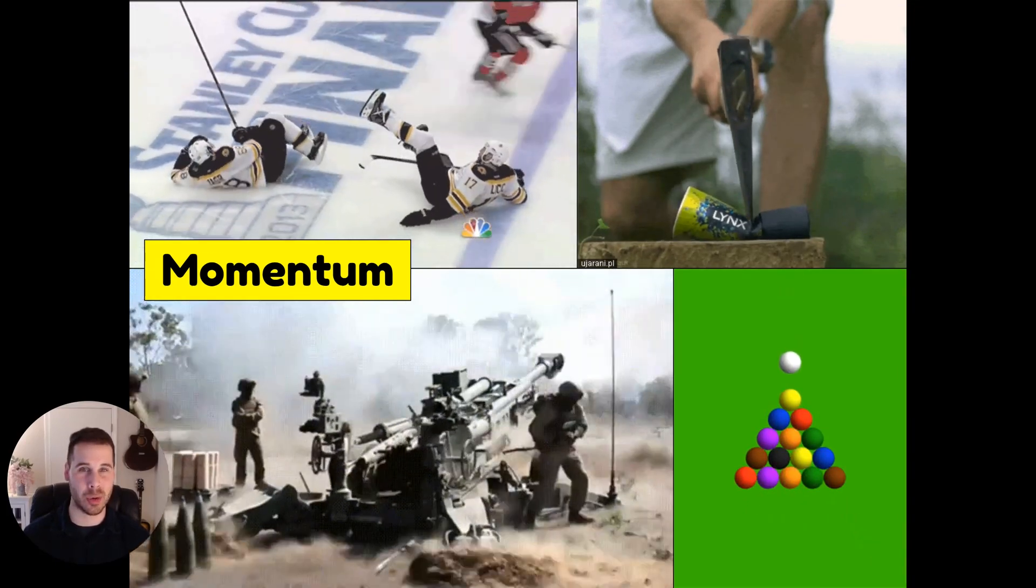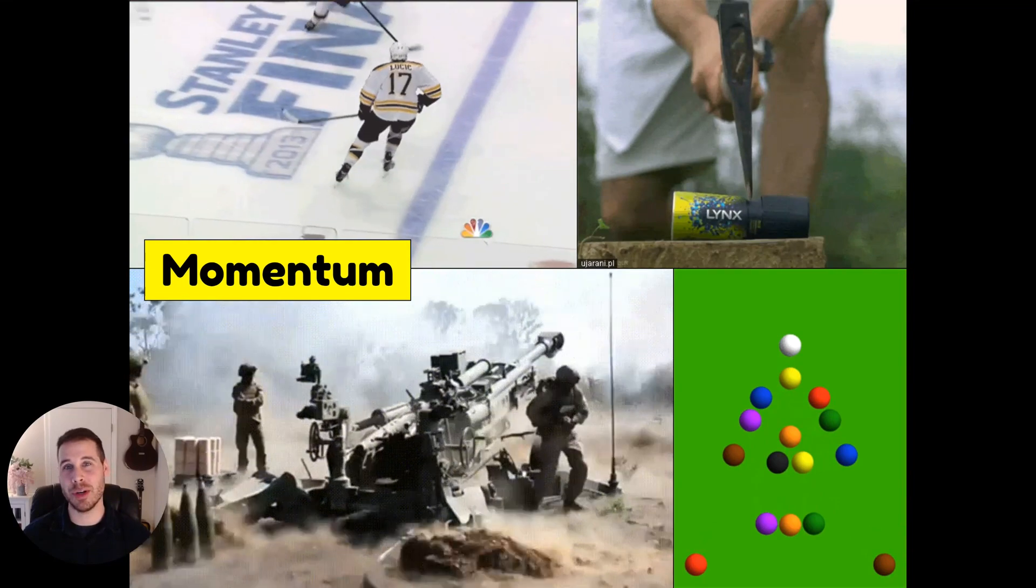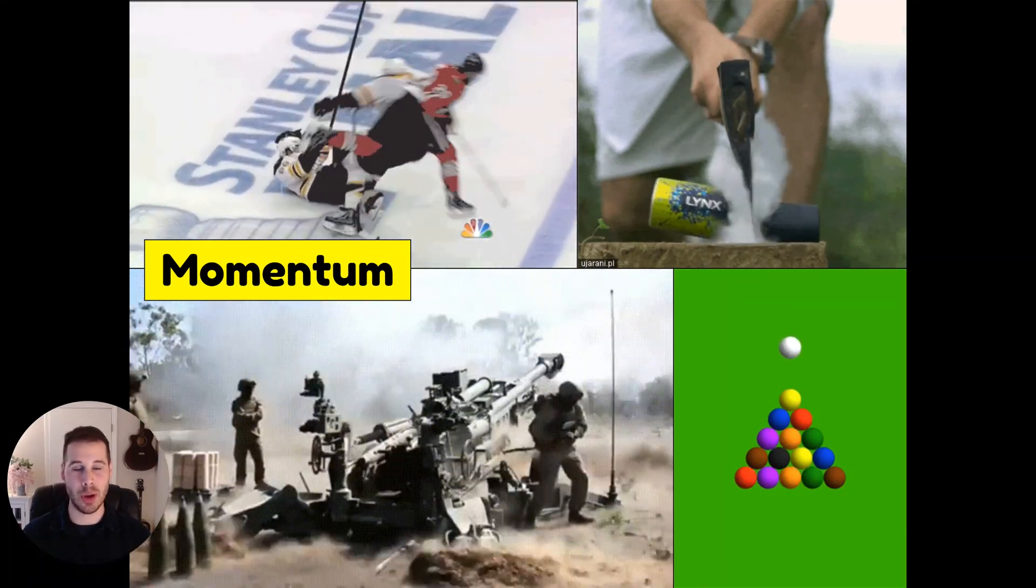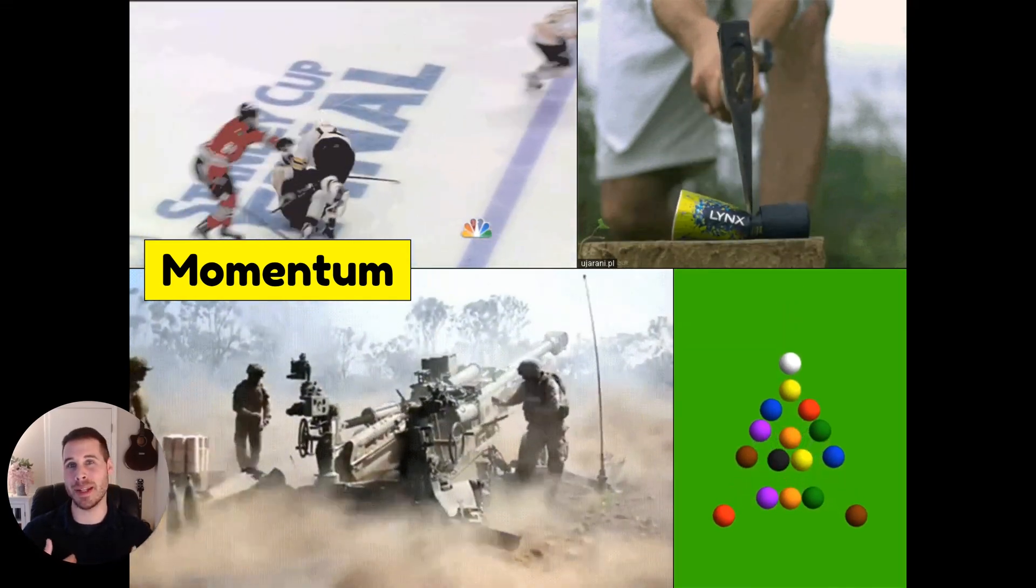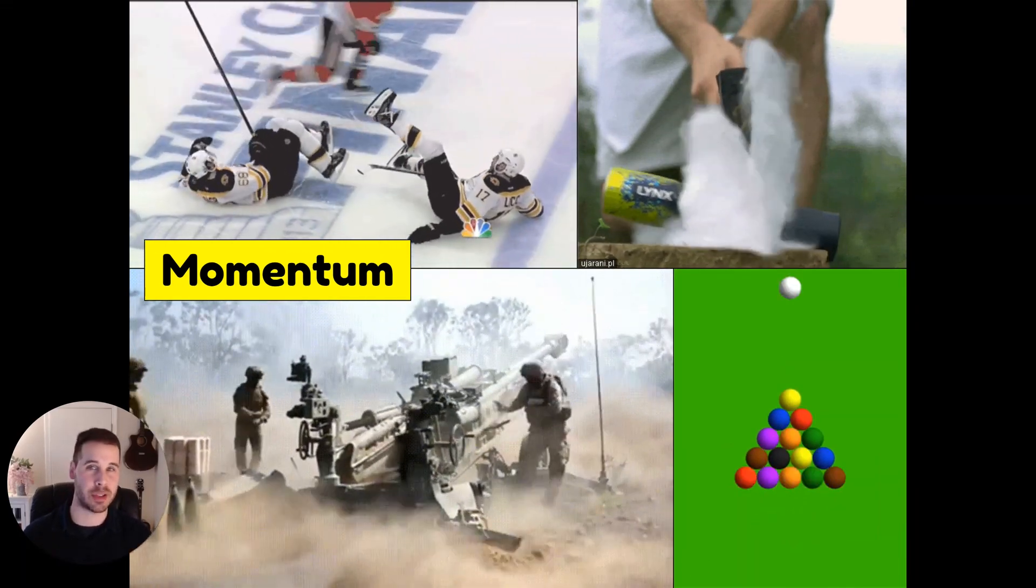Similarly, in the bottom right-hand corner, there's a billiards table where someone provides momentum to the white cue ball, and when that cue ball strikes the other billiard balls, it transfers its momentum into them, so they start moving as a result.